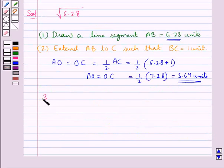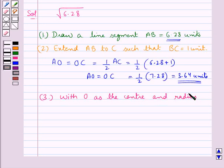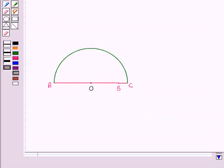Then in the next step, with O as the center and radius as OA, we draw a semicircle. So taking O as the center and radius equal to OA, that is 3.64 units, we have drawn this semicircle.